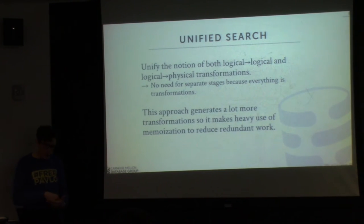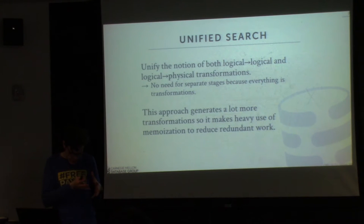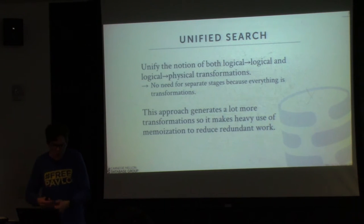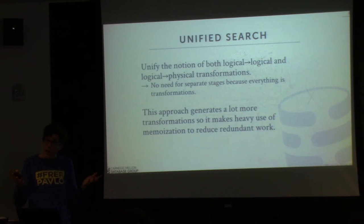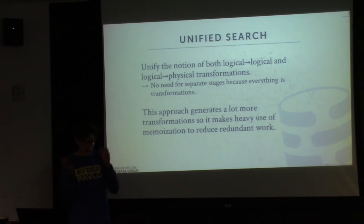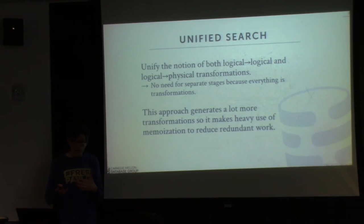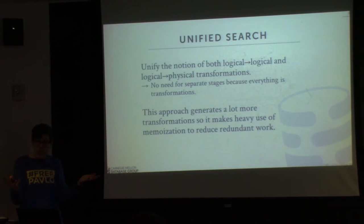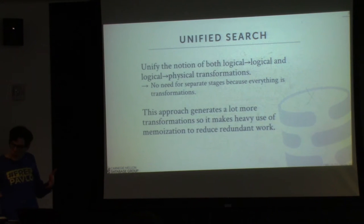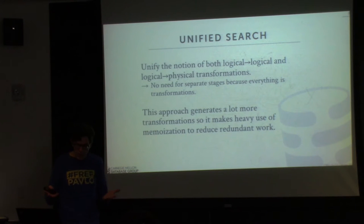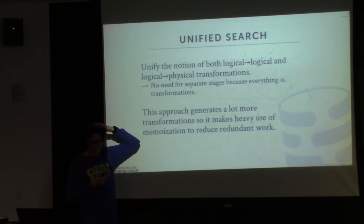The unified search model — as in Volcano, Cascades, and Orca — doesn't have this idea of doing transformation steps and then moving on to other steps. You throw everything into a single search model and it knows how to traverse the solution space, apply transformations, and recurse into the query plan to optimize it. In my opinion, this is better because it's easier to implement: you just define rules, throw it all in, hit the blender button, and it spits out a reasonable query plan.